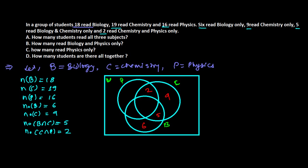Now we fill the remaining section of the chemistry circle. The total chemistry learners are 19, and that entire circle sums to 19. We have already placed 9 (chemistry only), 5 (biology and chemistry only), and 2 (chemistry and physics only). So the remaining section — students who learn biology, chemistry, and physics — is 19 minus 9 minus 5 minus 2, which equals 3. So 3 students learn all three subjects.